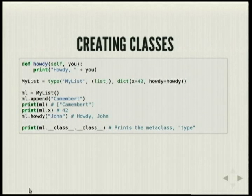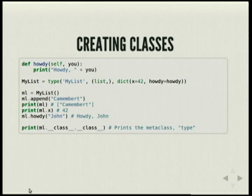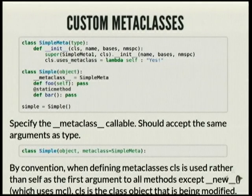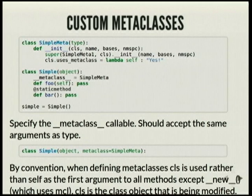This class can then create instances, and you can see how every attribute is still there — it's still inheriting from list. We just created a class dynamically. Metaclasses can be used to create classes. A metaclass is just another callable on the class, and it should accept the same arguments as type, but it's used to create classes.